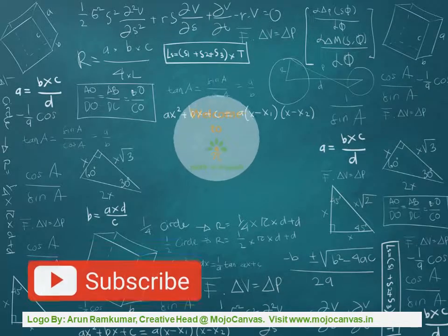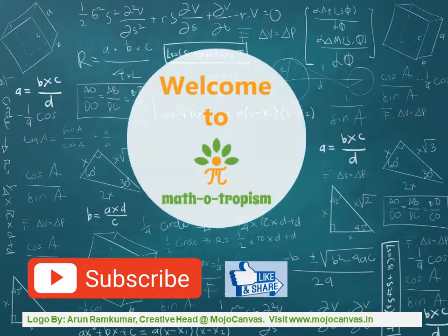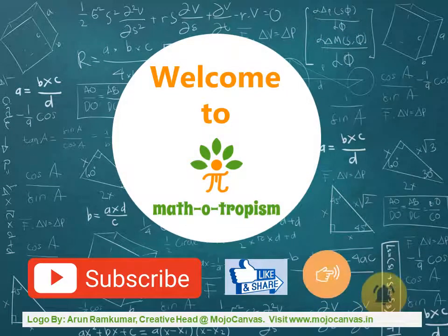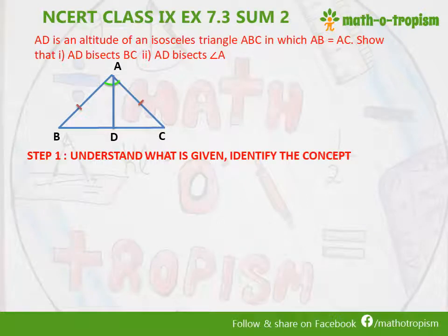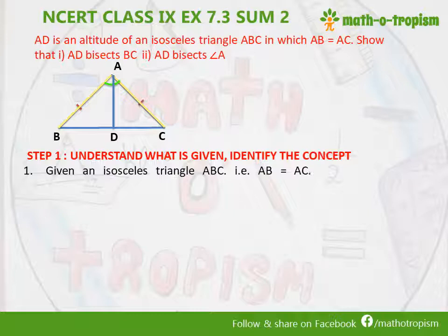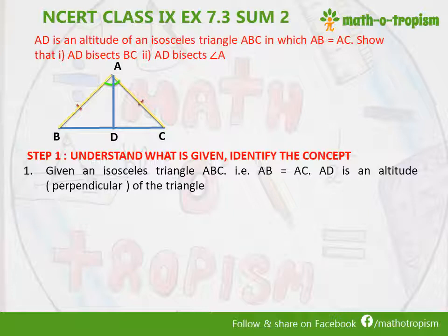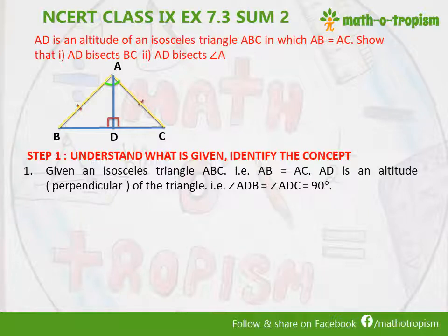Welcome to Mathotropism. The first step is understanding what is given and identifying the concept. We have an isosceles triangle ABC in which AB is equal to AC. We have AD as an altitude to the base BC of the triangle, meaning it is perpendicular, so angle ADB will be equal to angle ADC and both equal 90 degrees because it is the perpendicular line.